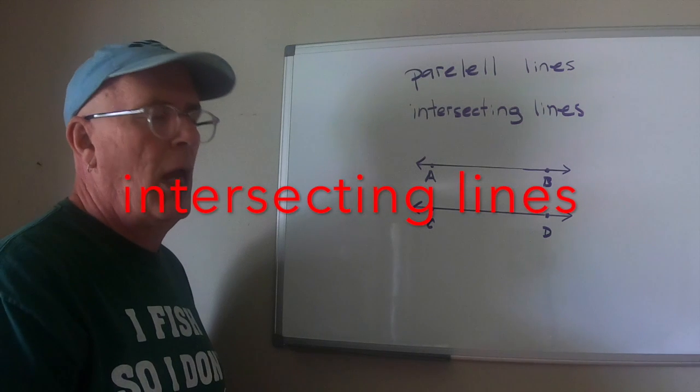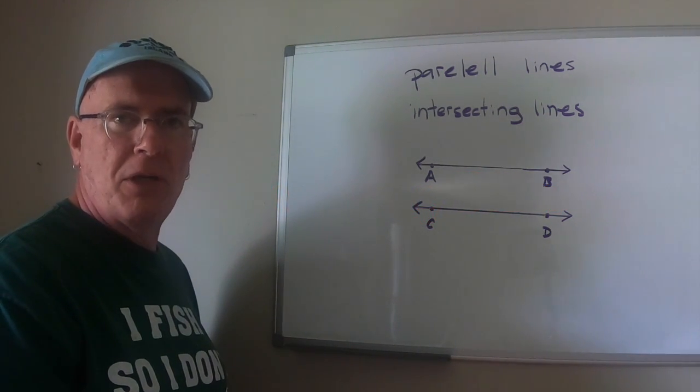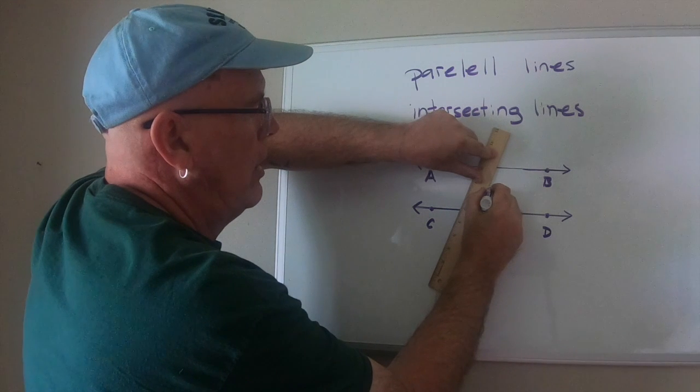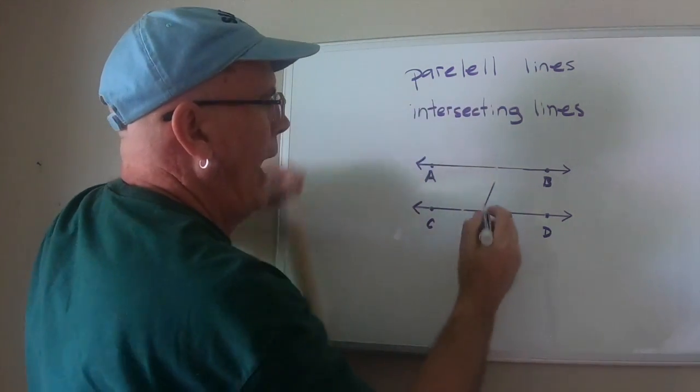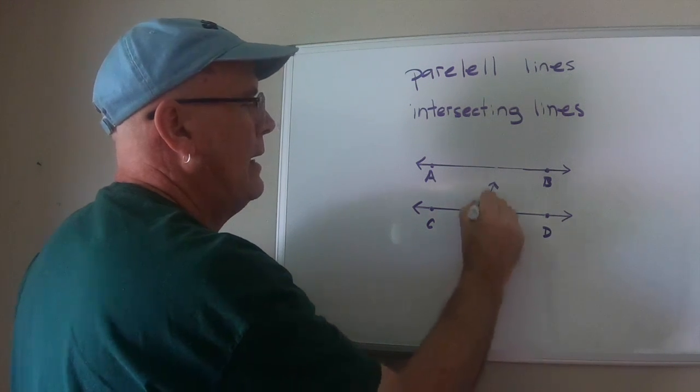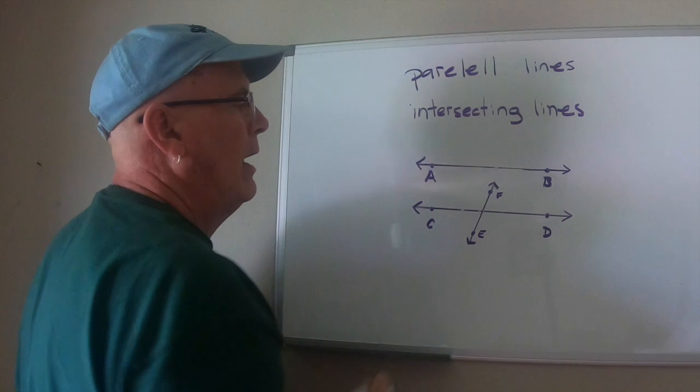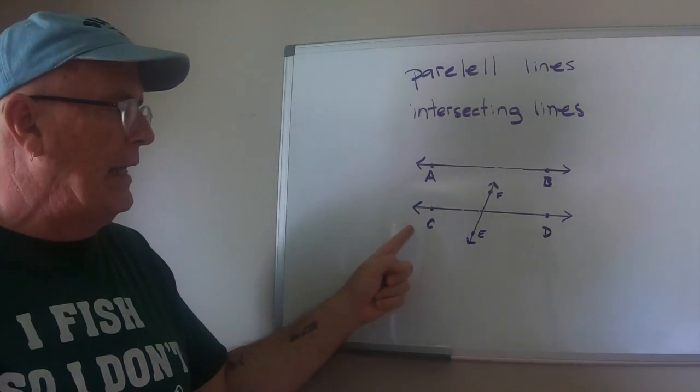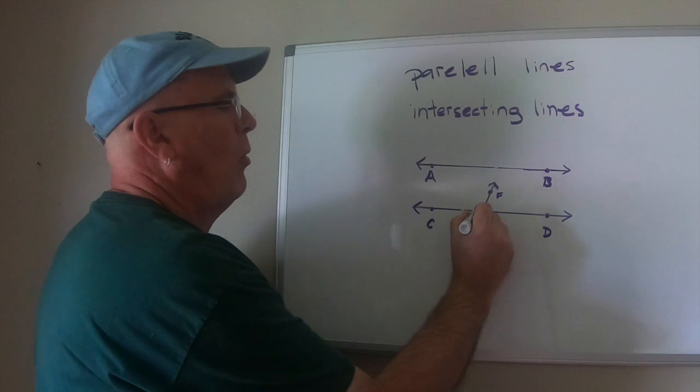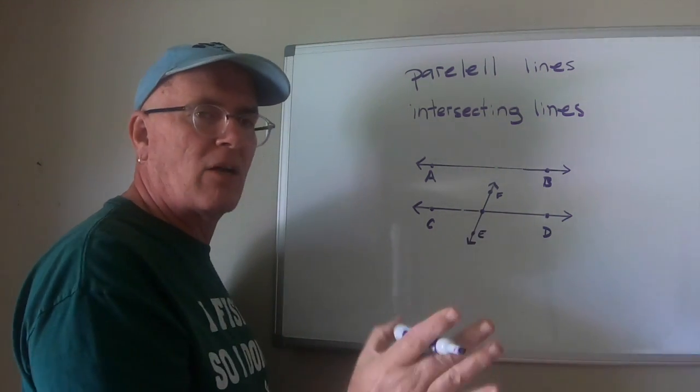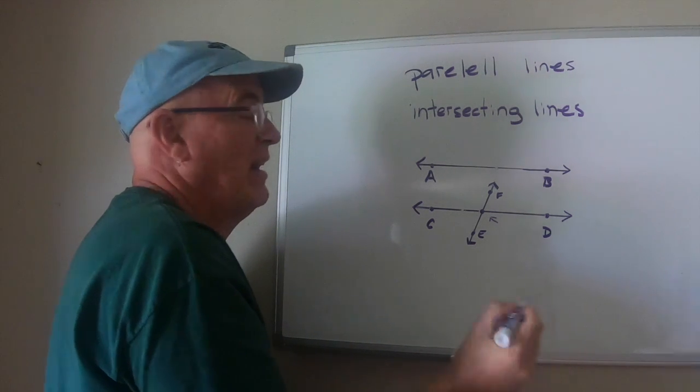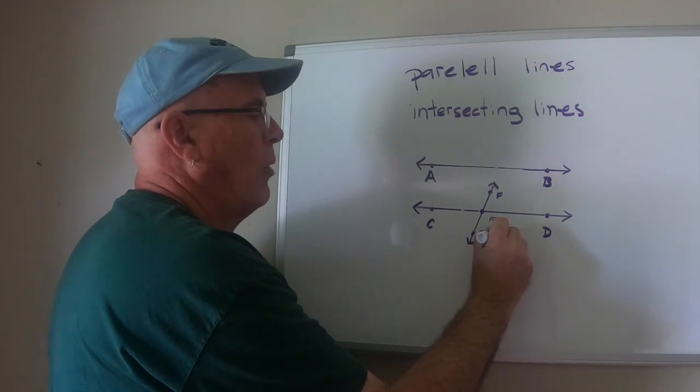Now intersecting lines, what you get is two lines that cross each other at a particular point. So if I were to draw a line through here, and if I were to label this line EF, then you could say that line EF intersects with line CD. That's called intersecting lines. And you can even put a point right here because that's where they intersect. And this point could be labeled point anything. You could name it anything you want. But in this case, I'm going to go ahead and label it point G.